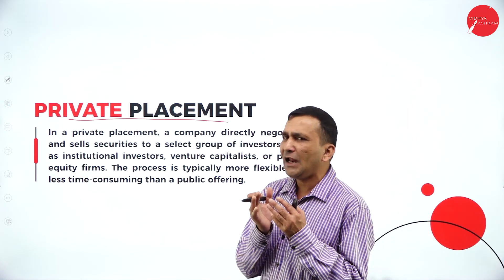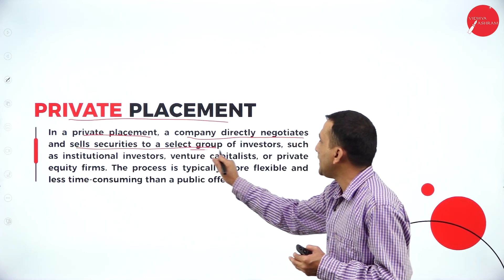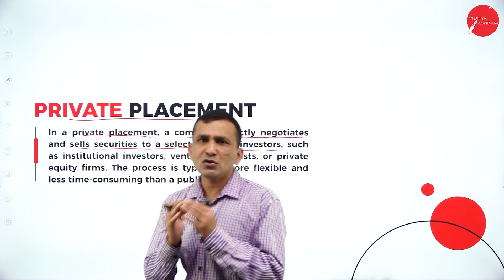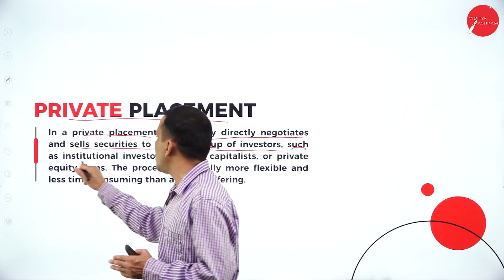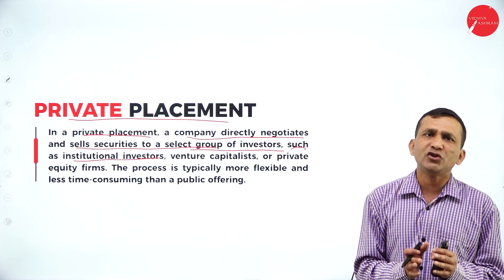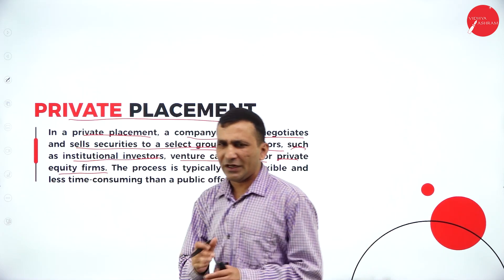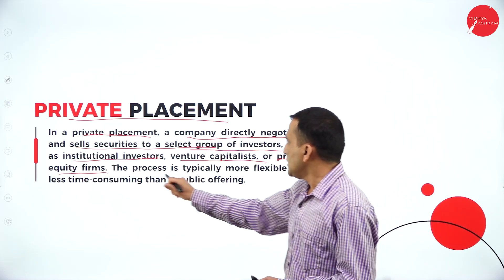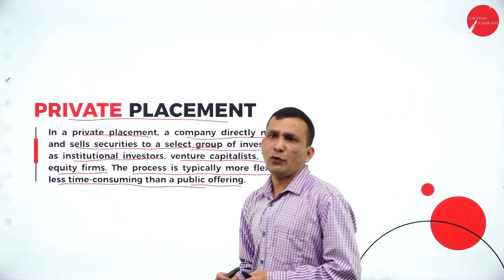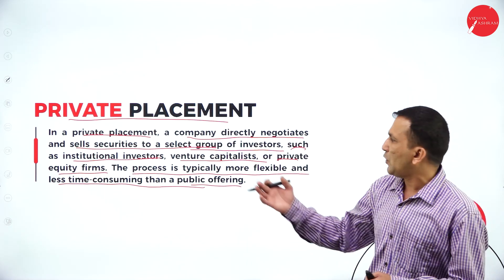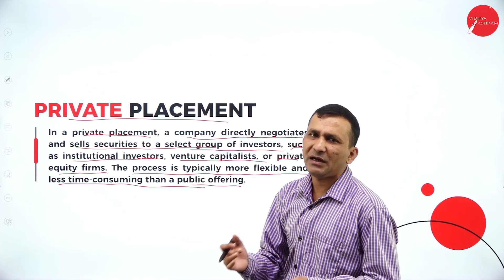Next: private placement. In a private placement, the company directly negotiates and sells securities to a selected group of investors — not completely open to all individuals. Only the selected group — high-income groups, employees, management, or substitute companies — such as institutional investors, venture capitalists, and private equity firms. This is focusing only for the selected group. The process is typically more flexible and less time-consuming than public offering. In a public offering, you need opening dates, closing dates, and prospectus printing — too many processes are involved. But for private placement, the procedures are very few and time consumption is very low.